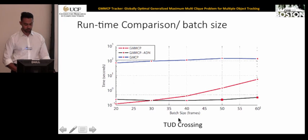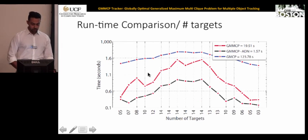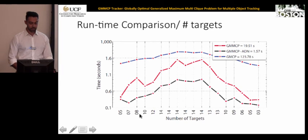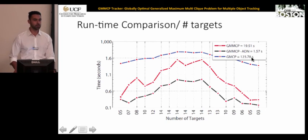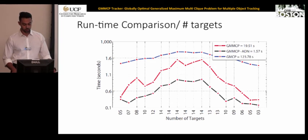For TUD Crossing, again varying frames per segment from 20 to 60, using aggregated dummy nodes gives much lower runtime compared to without them and compared to the GMCP tracker. When comparing runtime versus number of targets with 50 frames per batch on the Parking Lot sequence, runtime increases with more targets. Overall, our method takes on average less than two seconds to process 50 frames, which is approximately 4 frames per second.